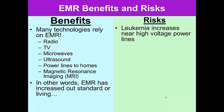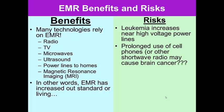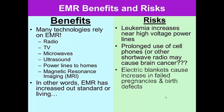What are the risks? Leukemia has been, you've seen increased incidences of leukemia near high voltage power lines. So that might be a cause. Little relationship, we're not sure. Prolonged use of cell phones or other short-wave radio may cause brain cancer. We don't know. Electric blankets cause increase in failed pregnancy and birth defects. So the electromagnetic radiation may cause.